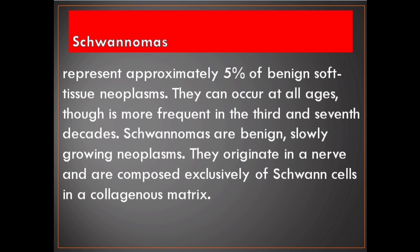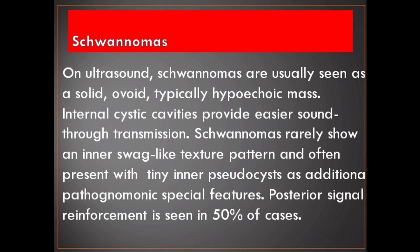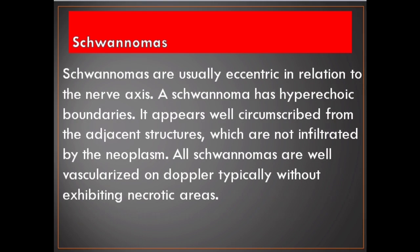Schwannomas represent approximately 5% of benign soft tissue neoplasms. They can occur at all ages, though more frequent in the third and seventh decades. They are benign, slowly growing neoplasms originating in a nerve and composed exclusively of Schwann cells in a collagenous matrix. On ultrasound, schwannomas are usually seen as a solid, ovoid, typically hypoechoic mass. Internal cystic cavities provide easier sound-through transmission. Schwannomas rarely show an inner swag-like texture pattern and often present with tiny inner pseudocysts as additional pathognomonic features. Posterior signal reinforcement is seen in 50% of cases. Schwannomas are usually eccentric in relation to the nerve axis, have hyperechoic boundaries, appear well circumscribed from adjacent structures, and are well vascularized on Doppler without exhibiting necrotic areas.